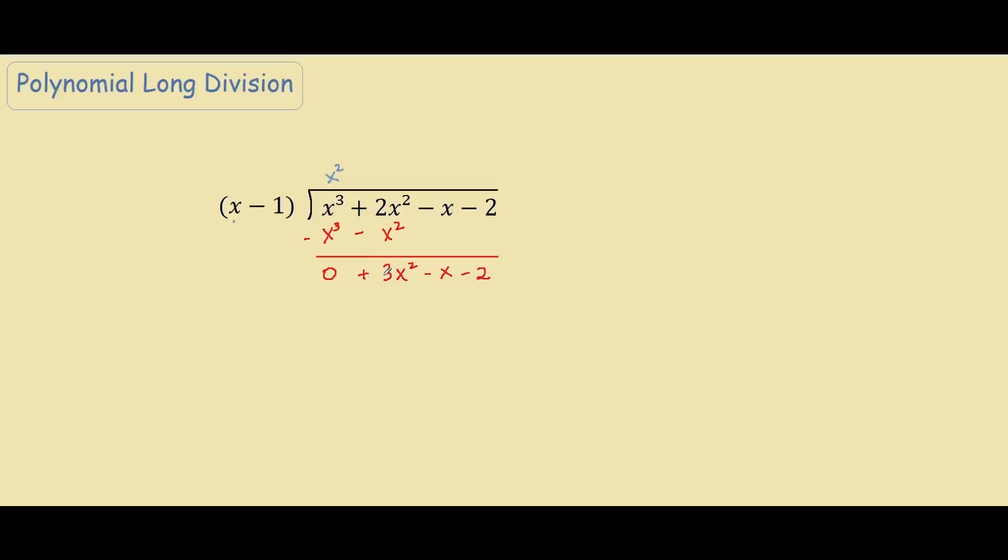So with our new expression, we look at our x again and divide 3x squared by x. We will get 3x. Again, repeating the same step, 3x times x minus 1, we will get 3x squared. And 3x minus 1 is negative 3x.